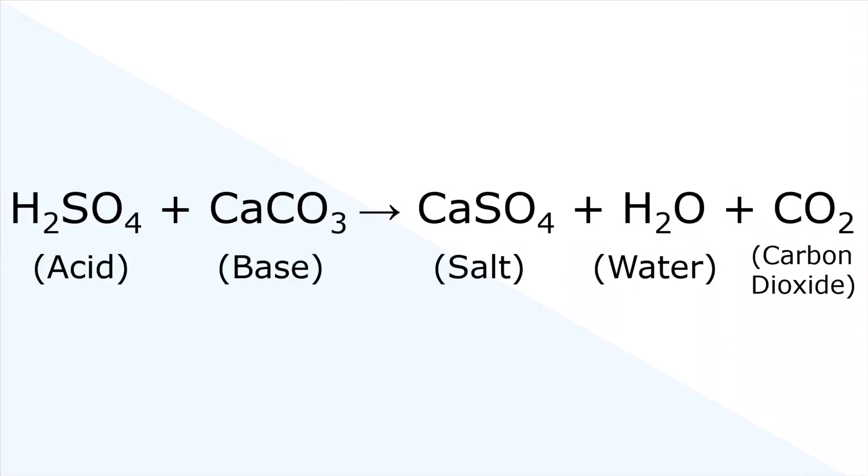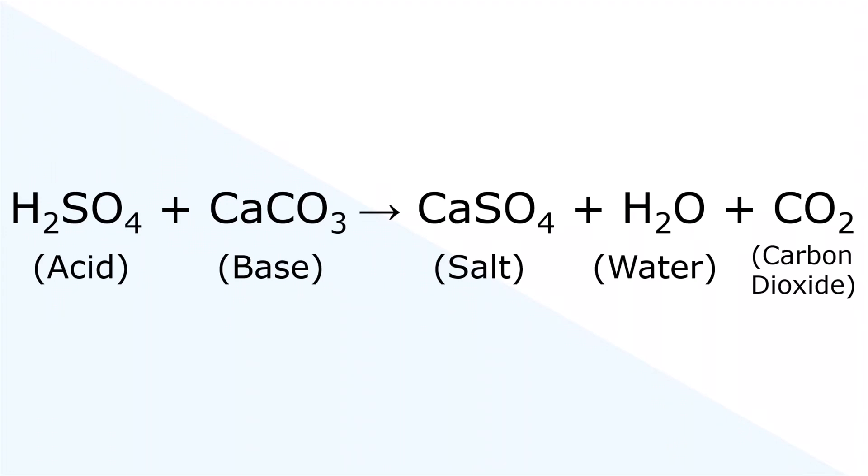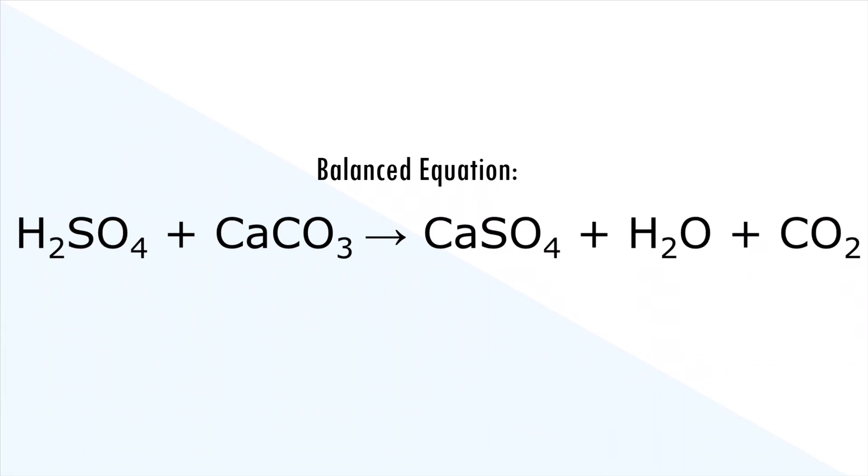Let's form an equation from this. When sulfuric acid is combined with calcium carbonate, the base, this reaction gives off calcium sulfate as salt along with water and carbon dioxide being the byproducts. Carbon dioxide is formed in this equation because calcium carbonate is a metal carbonate reacting with acid. The balanced equation is presented like this.